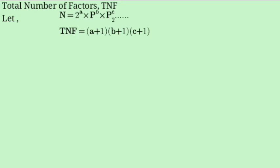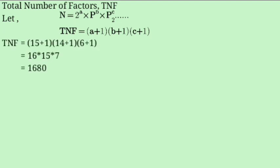Total number of factors: we add 1 to each power and multiply. So (15+1)(14+1)(6+1) = 16 × 15 × 7, which gives us 1,680.